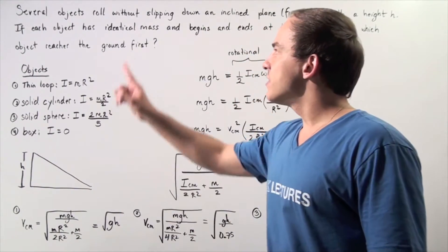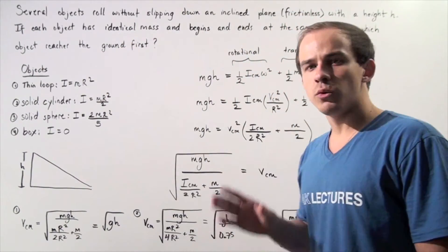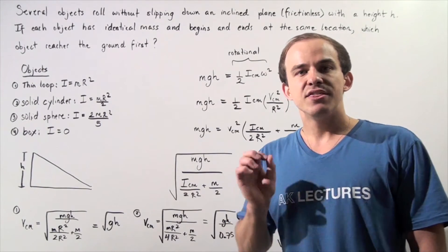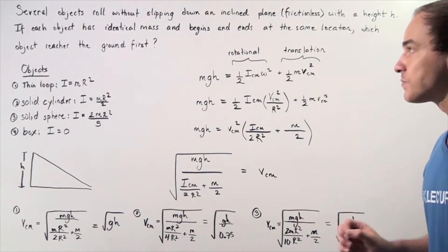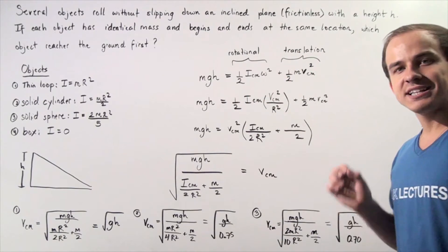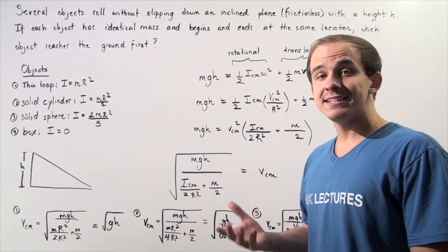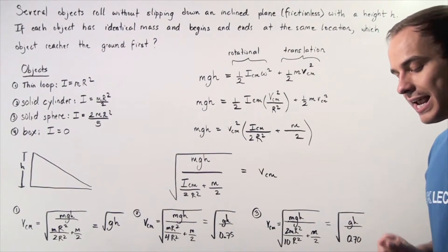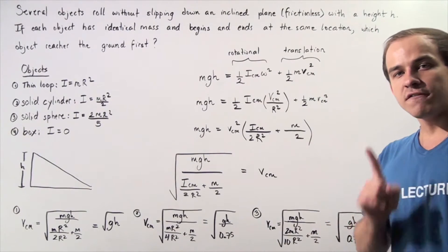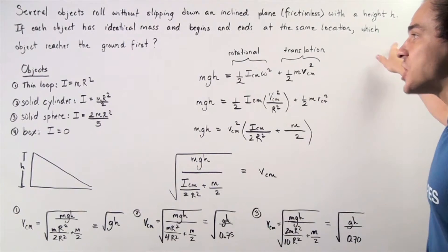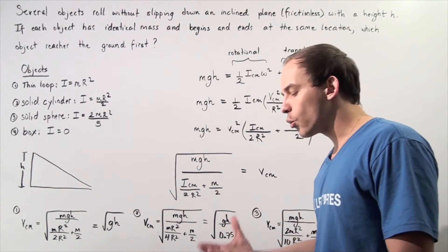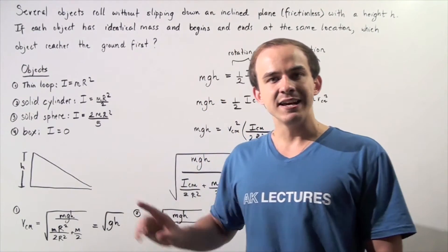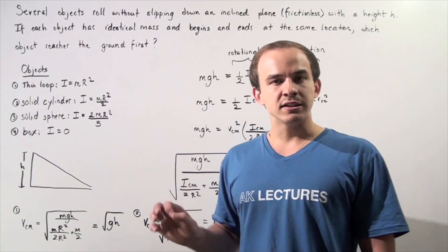Let's suppose that several objects roll without slipping along a frictionless inclined plane that has a height of h. If each object has identical mass and begins and ends at the same exact position along our inclined plane, we want to answer the following question: which object reaches the ground first? In other words, which object has the highest linear velocity at the bottom of the inclined plane?